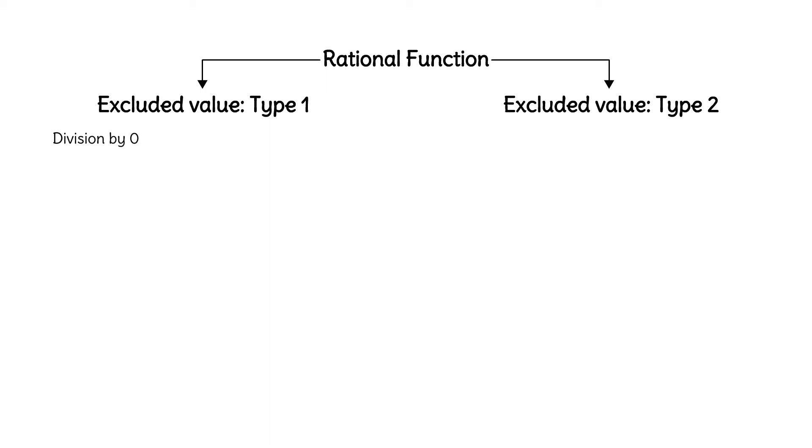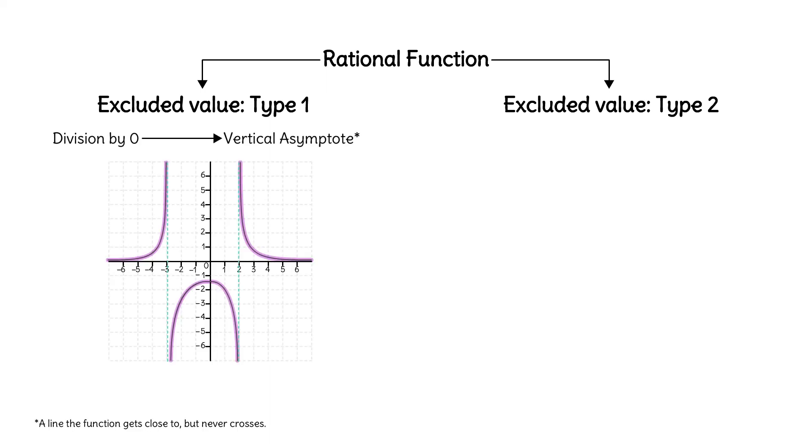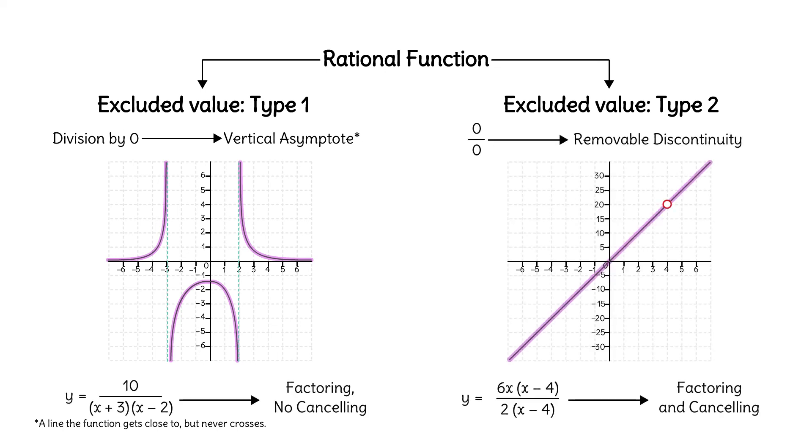In summary, rational functions often have one or both of these two types of excluded values. Division by 0 results in a vertical asymptote, while 0 over 0 gives us a removable discontinuity. Factoring and canceling will help you find and identify each type of excluded value correctly.